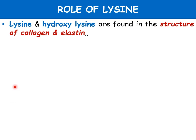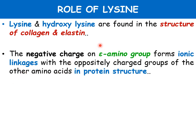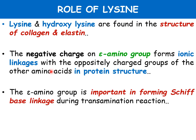Lysine and hydroxylysine are essential parts of the structure of collagen and elastin. The negative charge present on the epsilon amino group forms ionic linkages with the oppositely charged groups of other amino acids in the protein structure. The epsilon amino group is also important in forming Schiff base linkages during transamination reactions.